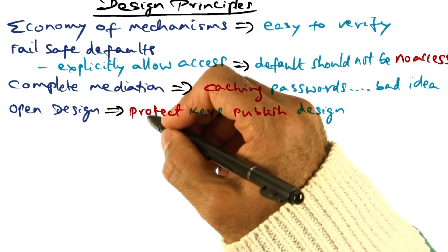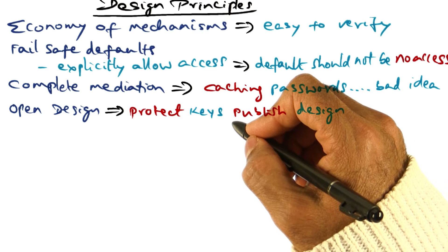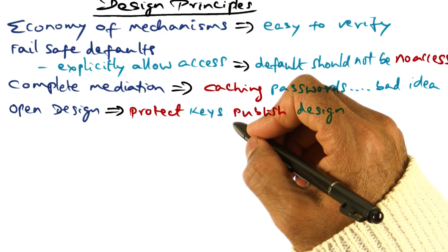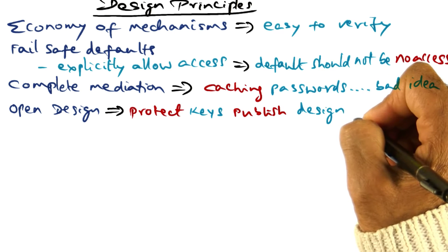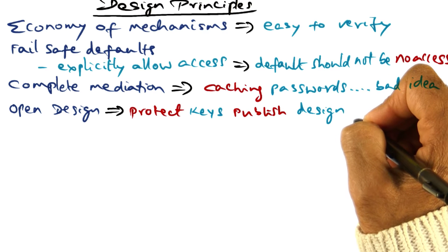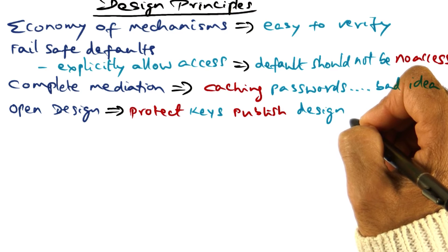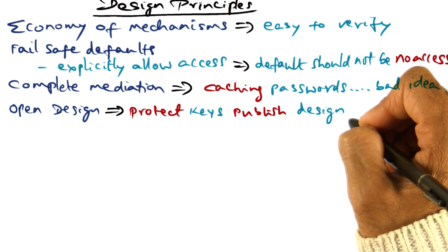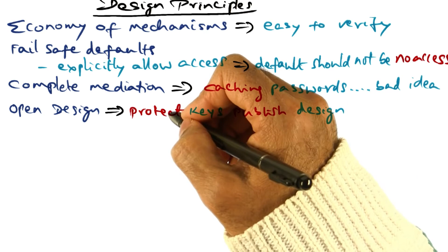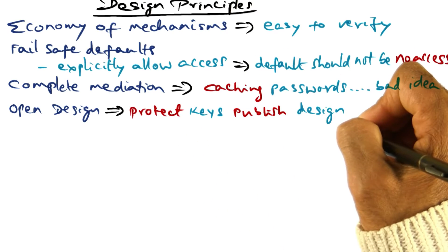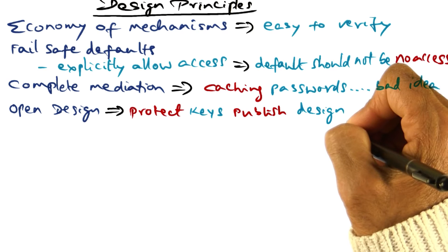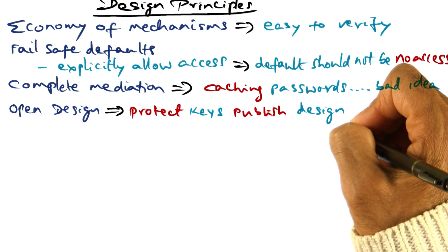The next design principle is what is called open design, meaning that you want to make the design completely open. In other words, you publish the design, exactly spec it out and publish it, but protect the keys that are used by the design. What that means is that cracking the design, even though it is published, in order to get any useful service out of the system, you have to present keys.